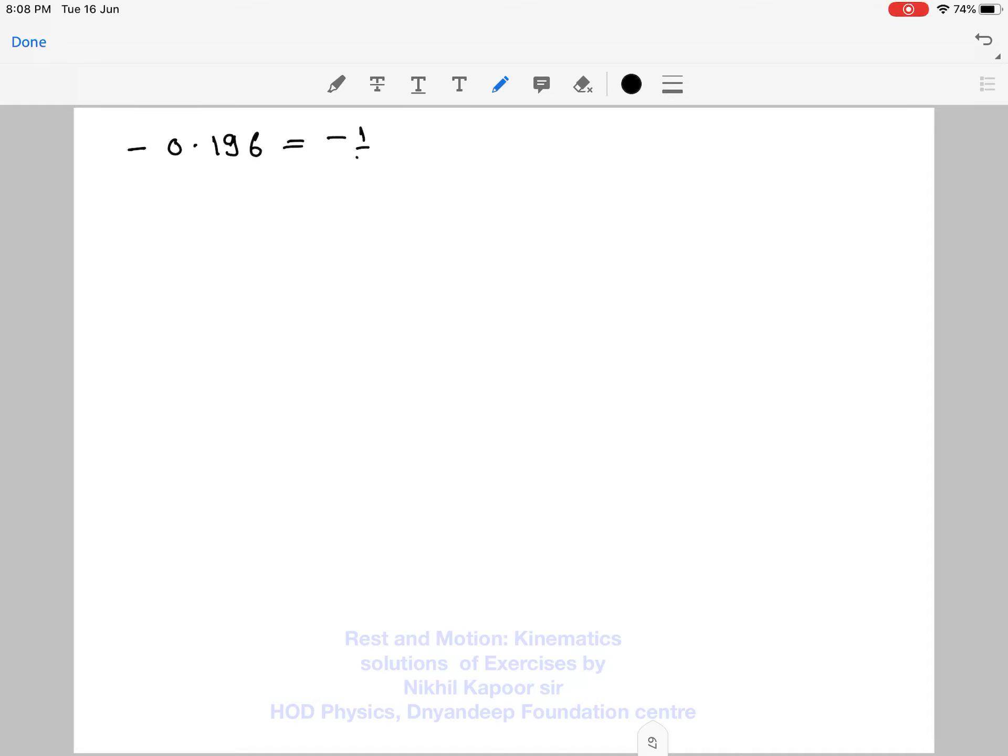This minus and minus will get cancelled out, or I will write it: 0.196 in meter is equal to ½ × 9.8 × t². This is nothing but 4.9 and the minus terms get cancelled, so t² comes out to be 0.196 divided by 4.9.